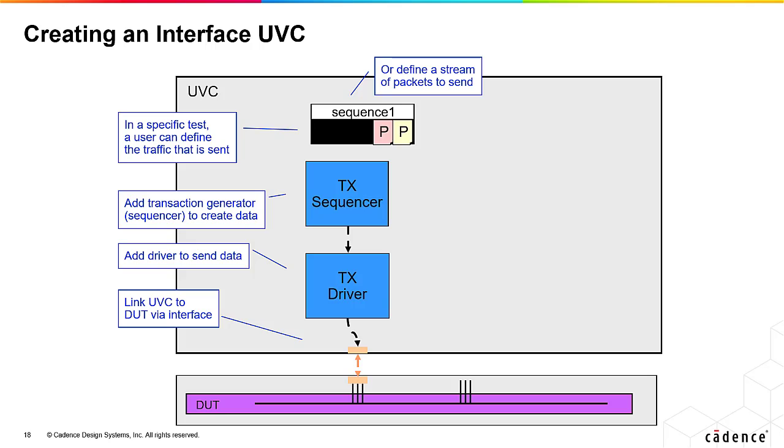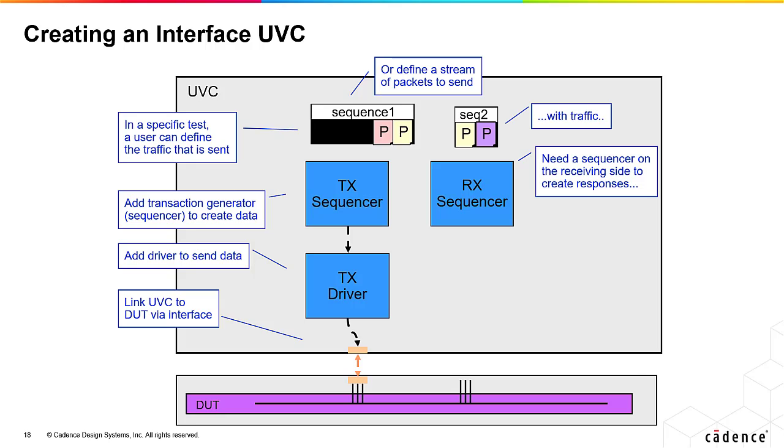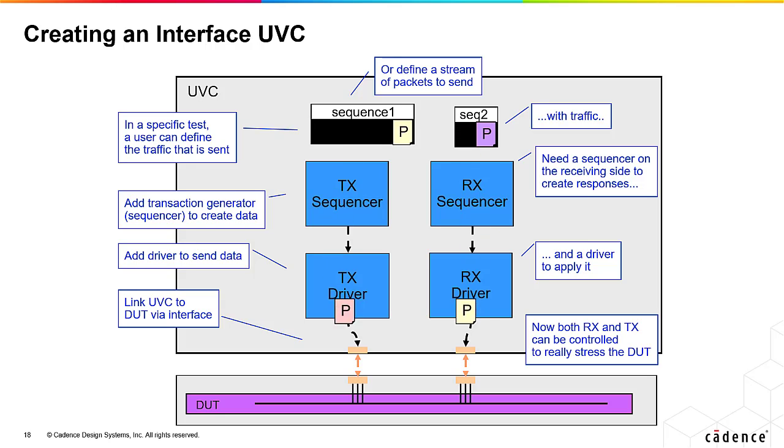On the output or receiver side of a DUT, we need a sequencer to create responses controlled by a sequence of data items and applied to the DUT by a driver. Now we can control both transmit and receive with read and write data to thoroughly stress the DUT.